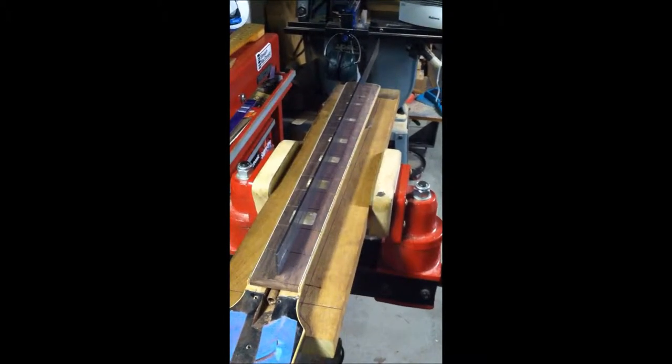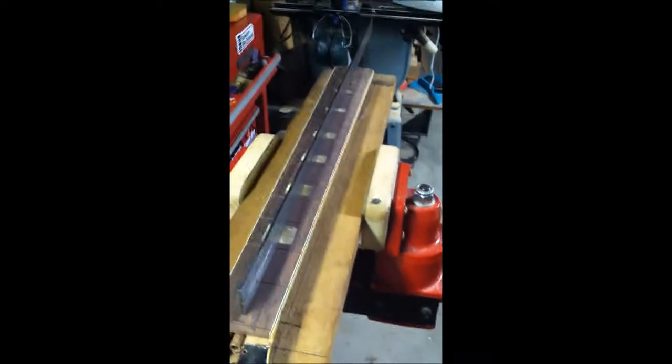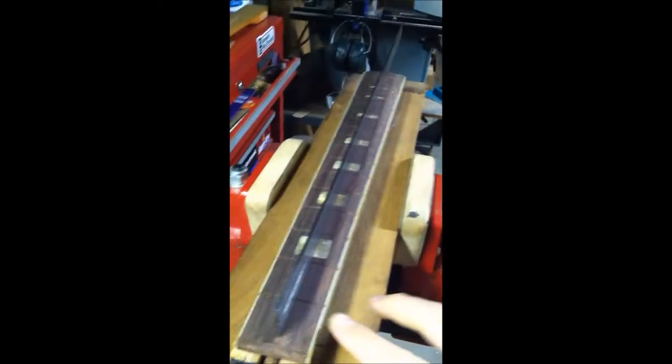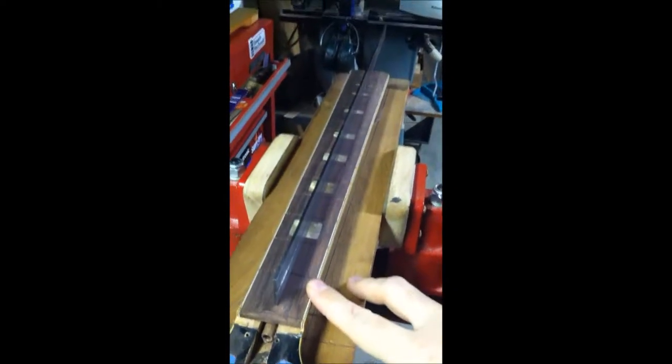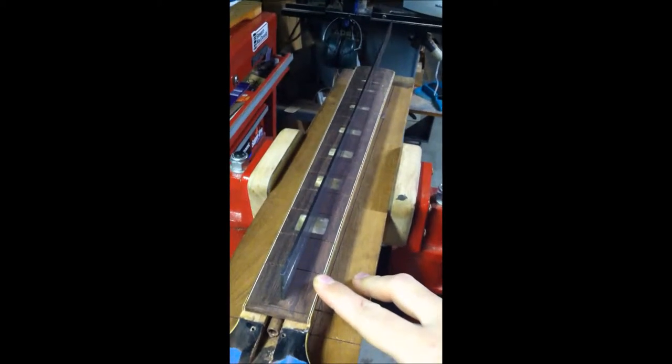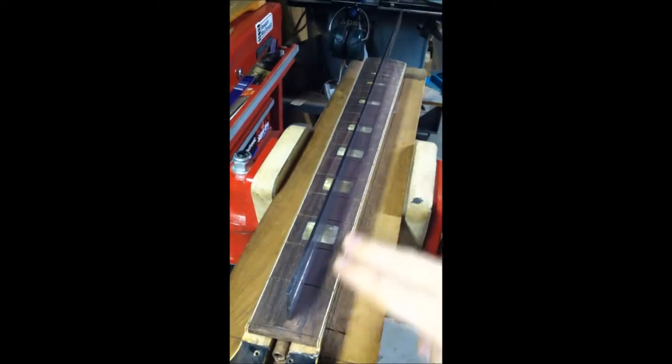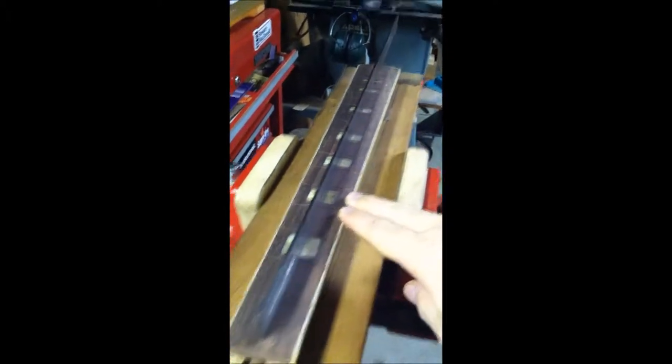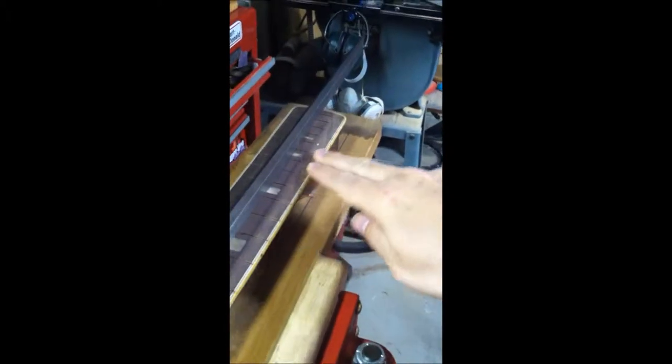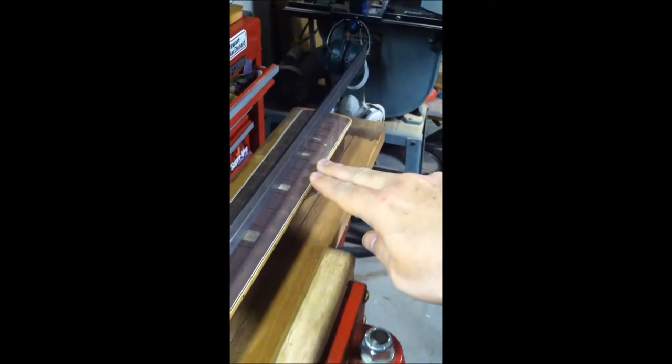I use the trusty Stewart MacDonald block, but in this case it was a little weird because this was actually a compound radius. I don't think that was intentional. You had a 10-inch radius about here, and once you got to about the 12th fret it flattened out to about 12.